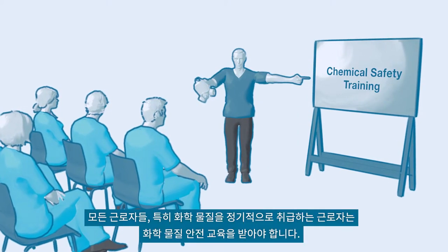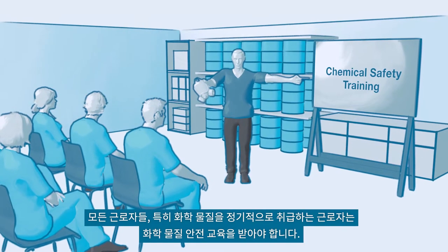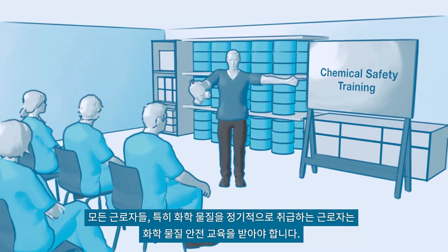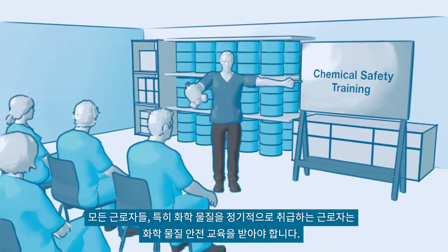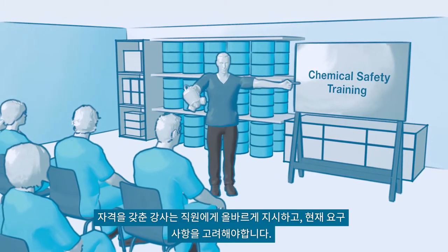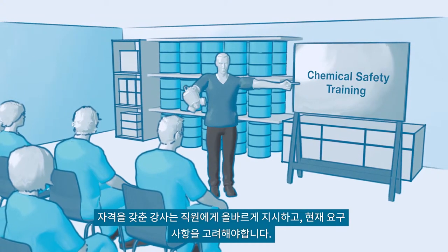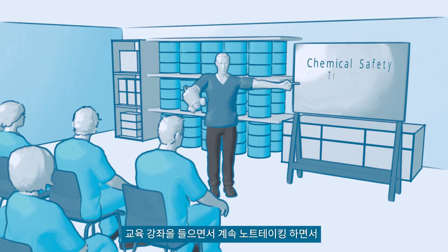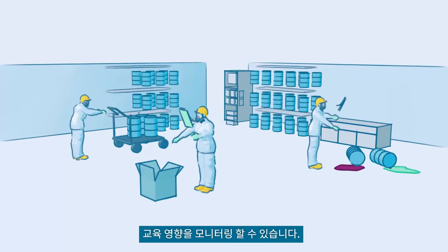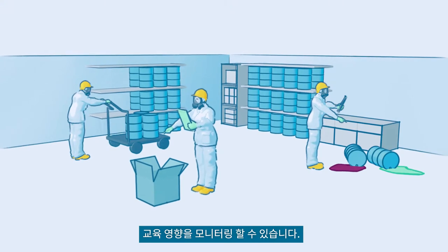These actions need to be supported by chemical safety handling training, which educates workers on the possible chemical hazards, how they may be exposed, how to handle chemicals properly, and how to protect themselves. All workers, especially those who regularly handle chemicals, should receive chemical safety training. A qualified trainer should instruct employees and take current needs and requirements into consideration. Keep up-to-date records of the training classes and monitor the training impact.